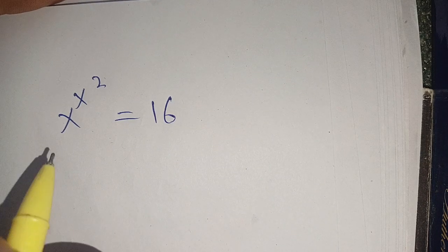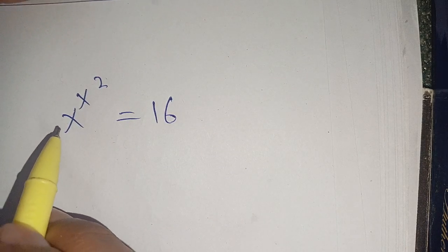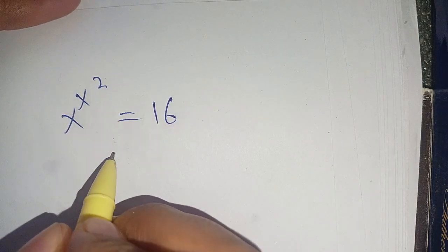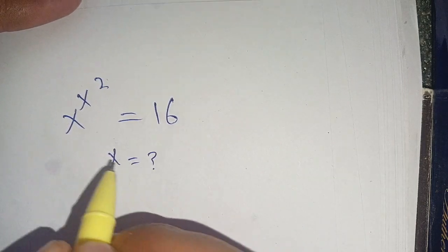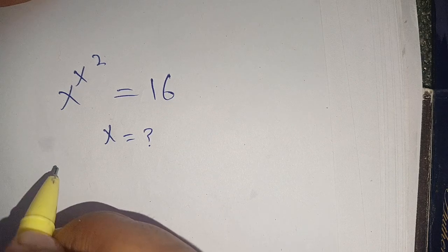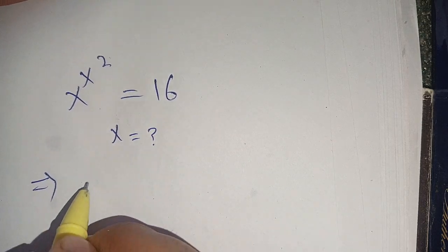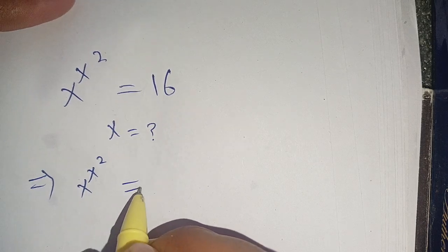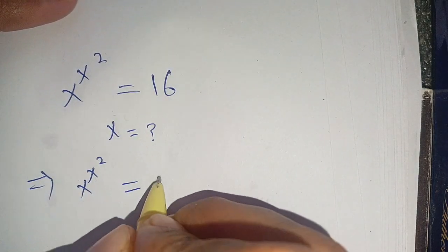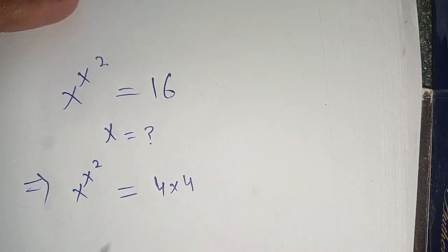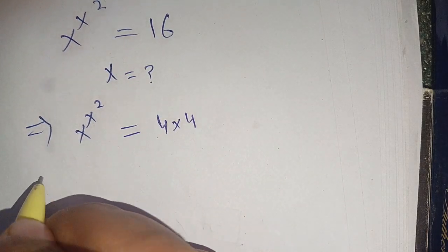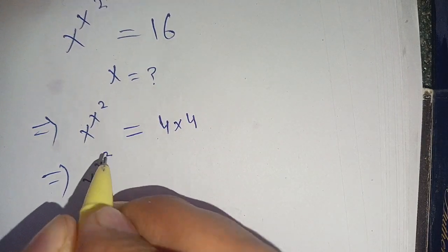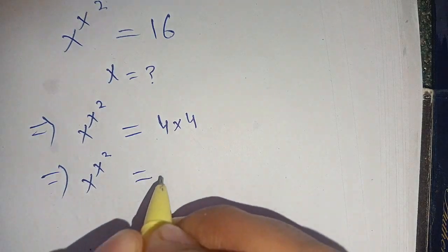Hello everyone. In today's video we are going to solve the problem x^(x²) = 16, and we have to find the value of x which satisfies this equation. We can write x^(x²) = 16, which can be broken down as 4 times 4, so x^(x²) = 4 × 4.